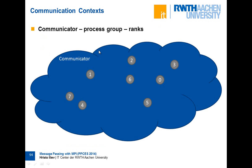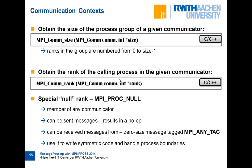A process can be a member of many communicators and can have a different rank in each. Therefore, the unique address is the communicator plus the rank — not the rank alone. MPI_Comm_size gives the number of processes in a given communicator, and MPI_Comm_rank obtains the rank of the calling process in that communicator.